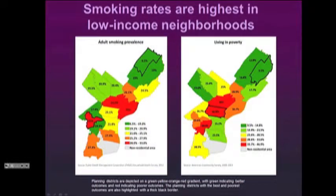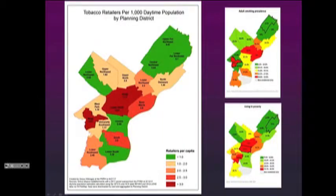Smoking rates are also highest in low-income neighborhoods. Philadelphia maps from the health department show adult smoking prevalence alongside the percentage of people living in poverty, and they look remarkably similar. A third map shows the density of tobacco retailers in Philadelphia neighborhoods — and that too aligns with the highest rates of smoking and the highest rates of poverty.